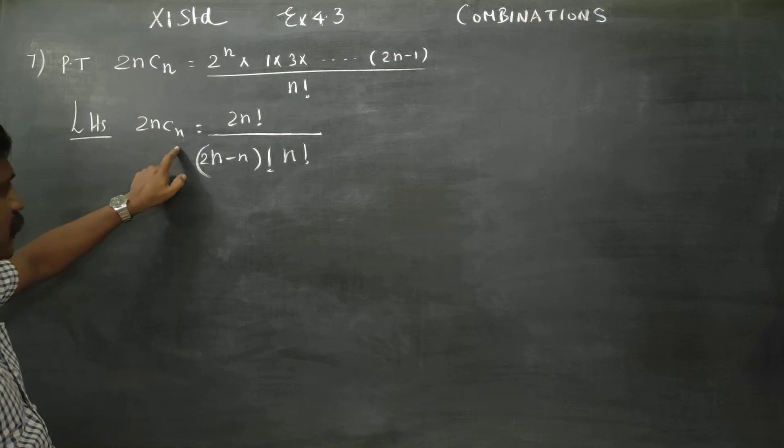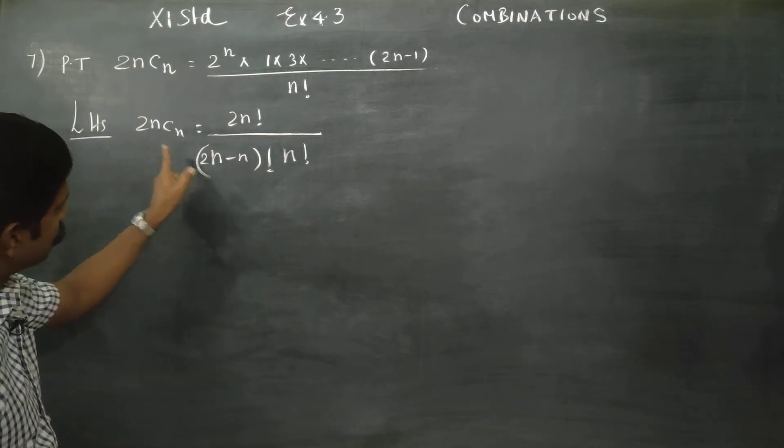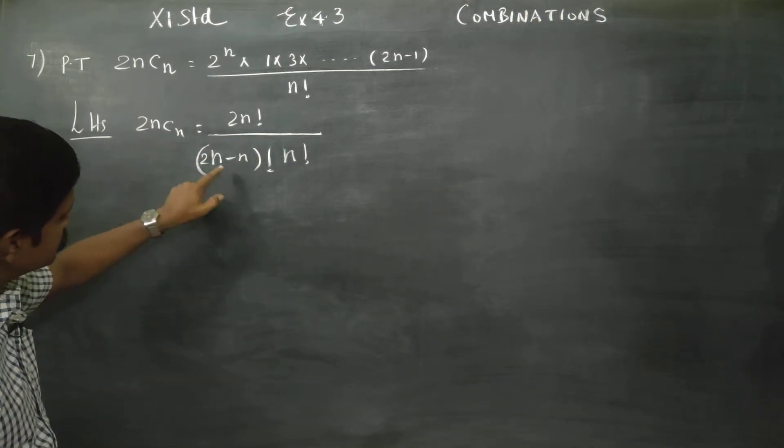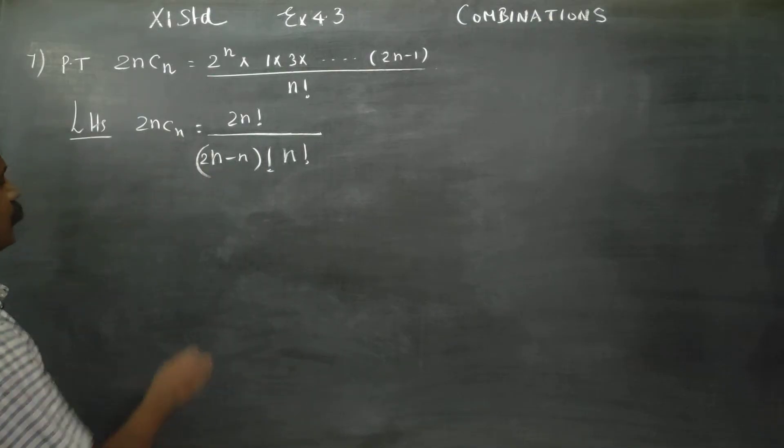NCR is equal to N factorial by N minus R factorial into R factorial.